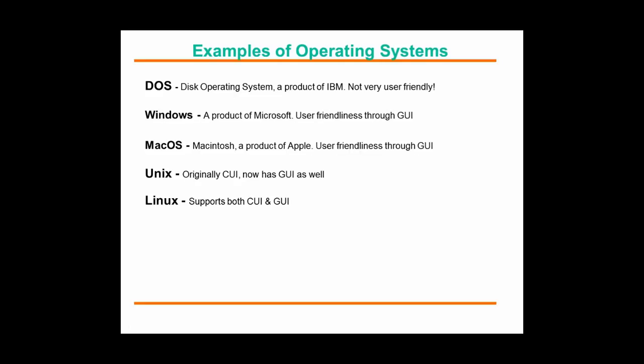Here are a few examples of operating systems available in the industry. The oldest one is the Disk Operating System, a product by IBM, which in my opinion is not very user friendly. Then we have Windows, one of the most popular GUI operating systems. We also have Macintosh, UNIX, and Linux. Windows is almost on all local PCs — if not 100%, at least 50–60% of the PC market is occupied by Windows.